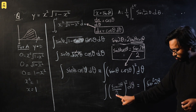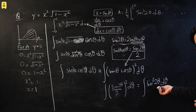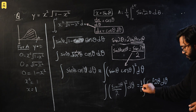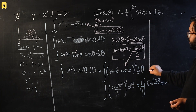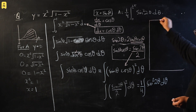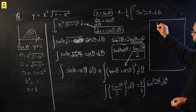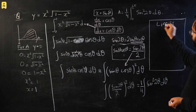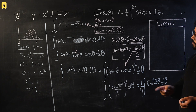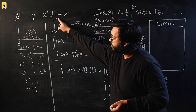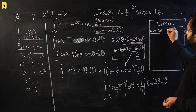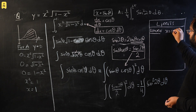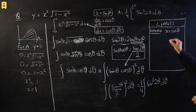Writing 1/4 outside the integral sign, the integral becomes one-quarter times the integral of sine squared 2theta dθ. Now we must change the limits. The original x-limits were 0 to 1. For the lower limit: x equals sine theta, so 0 equals sine theta, giving theta equals 0. For the upper limit: 1 equals sine theta, and sine theta equals 1 when theta equals pi/2. So the new limits are theta from 0 to pi/2.